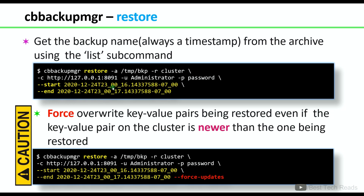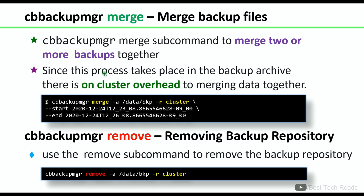For restore, get the backup name — which is always a timestamp — from the archive using the list command. You can provide backup names using start time and end time. The `--force` flag: when restoring, if you already have documents inside a bucket and the backup also has some of those documents, force updates will overwrite key-value pairs being restored even if the key-value pair on the cluster is newer than the one being restored.